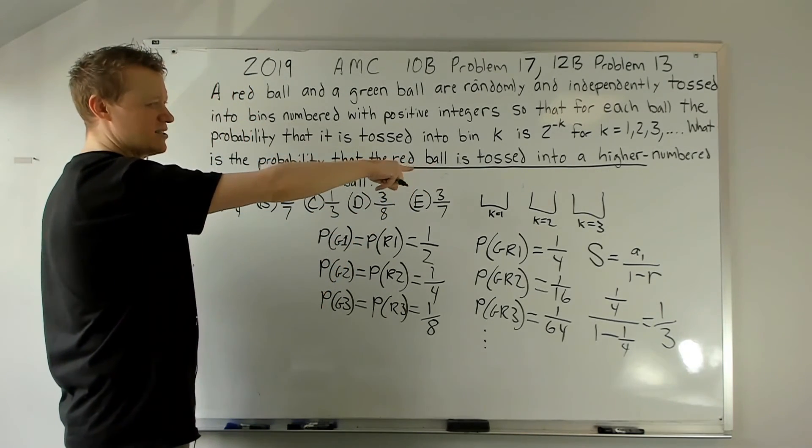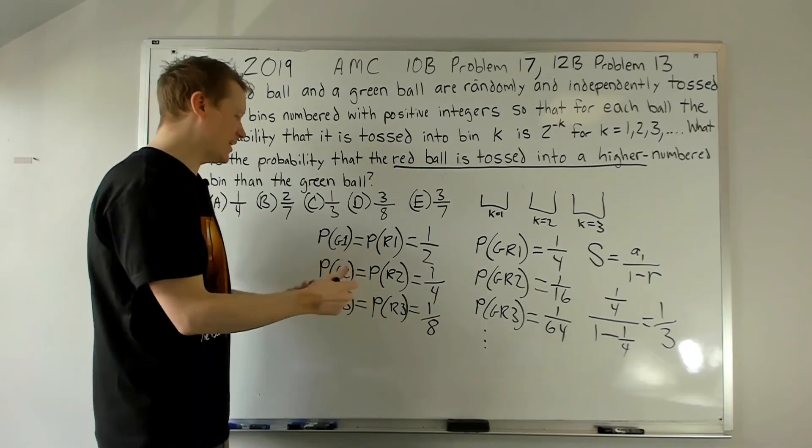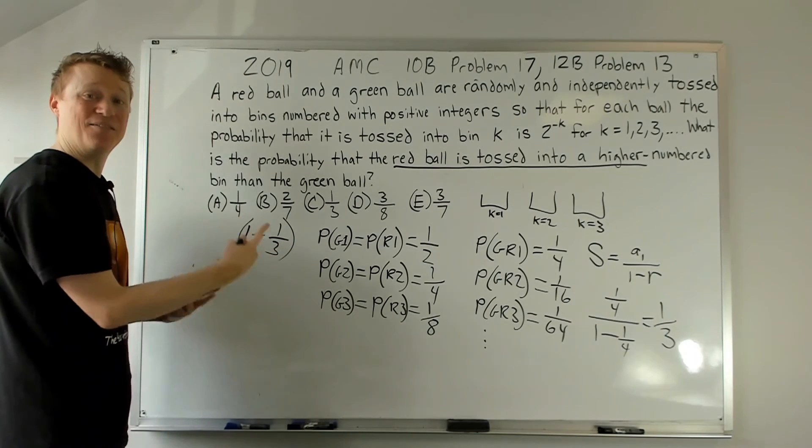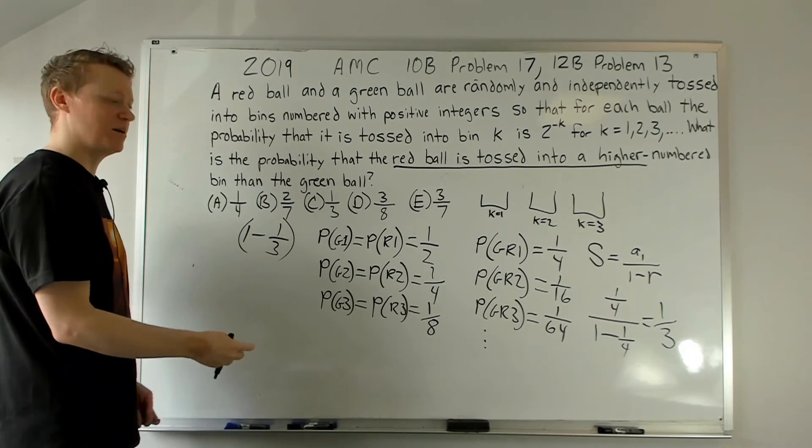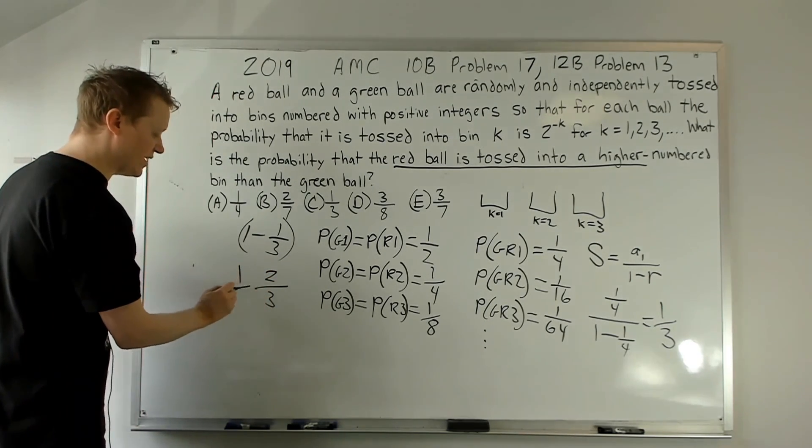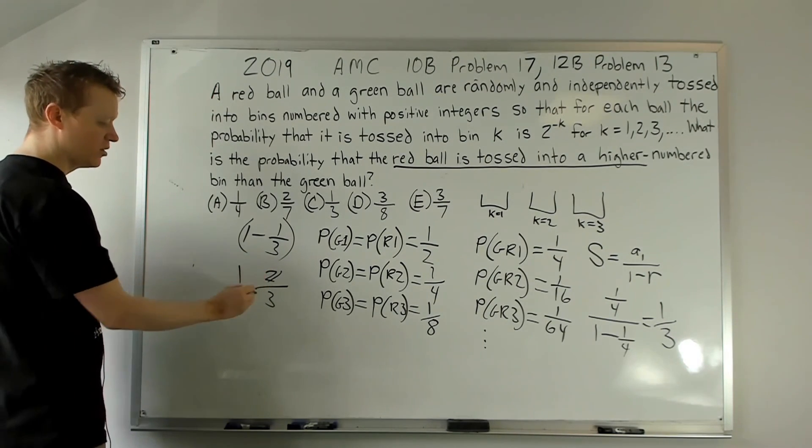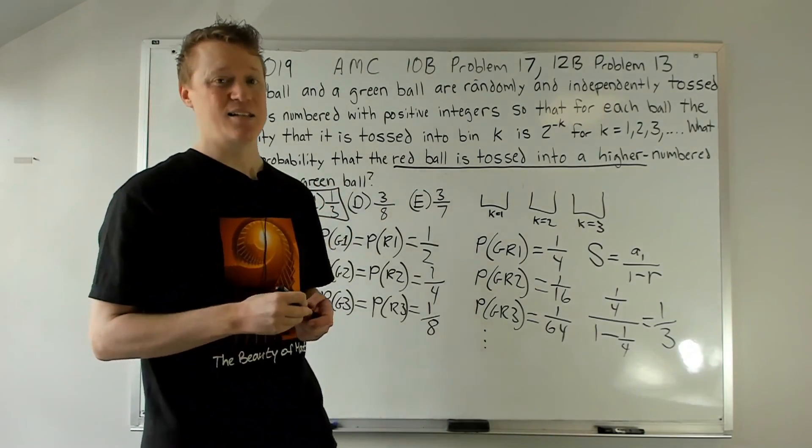So whatever's left over after we subtract the chance they land in the same bin, each of them should have an equal chance of being in a higher numbered bin of what's left over. Since this is two thirds, the equal chance will be one half of that two thirds, multiplied to get one third. The answer is C. I'll see you in the next one, guys.